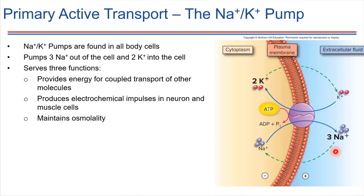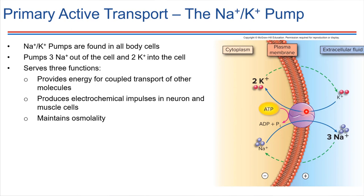Another example of primary active transport is the sodium-potassium pump — this one is very important. We've got a membrane with a carrier protein embedded in it, cytoplasm on the left, extracellular matrix on the right. This pump transports three sodium ions out of the cell and at the same time takes two potassium ions inside the cell, all powered by a molecule of ATP being hydrolyzed. This serves many different functions for cells.